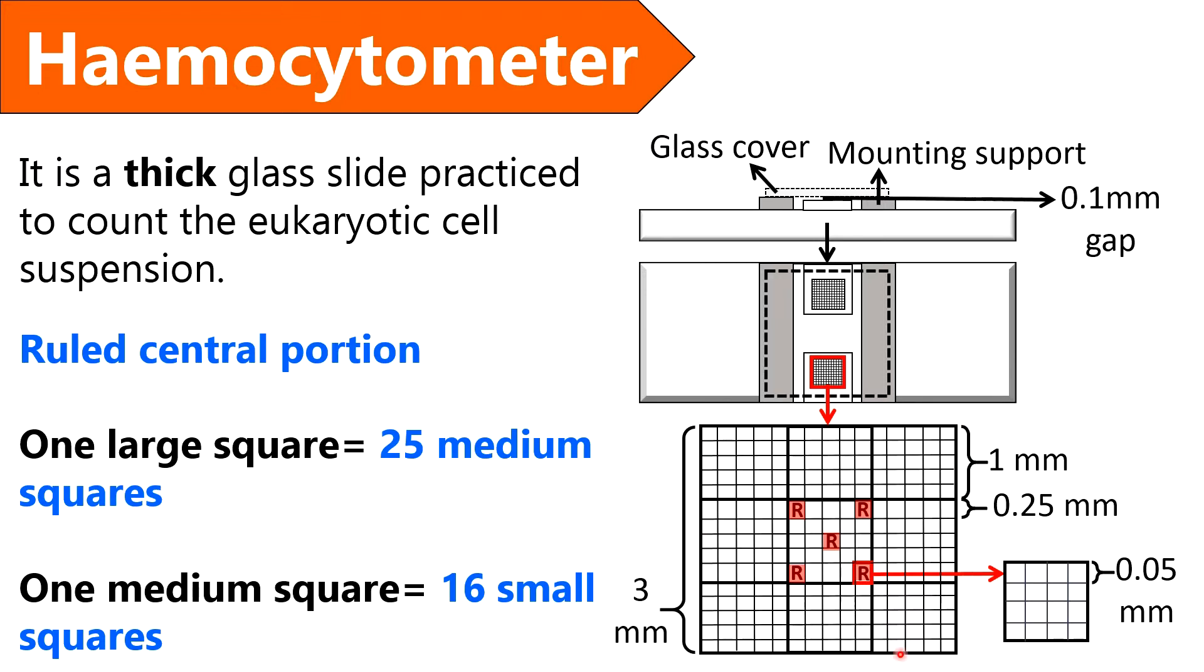A counting grid has 9 large squares as you can see in this diagram. This is the enlarged view of counting grid and you need to note a single large square possesses 25 medium squares, and a single medium square is ruled into 16 small squares.